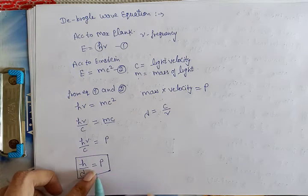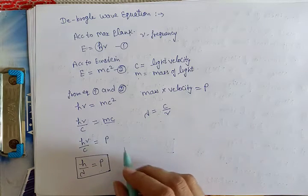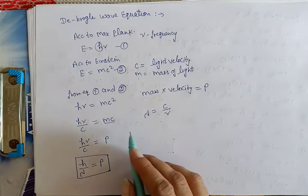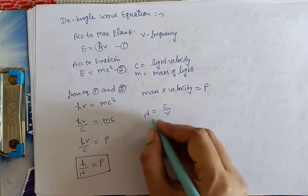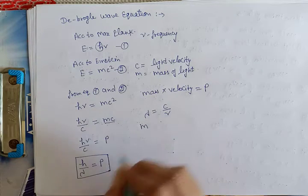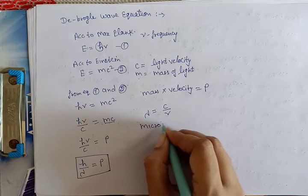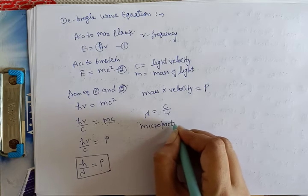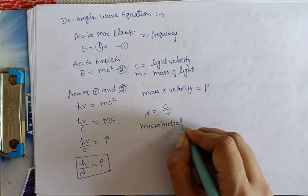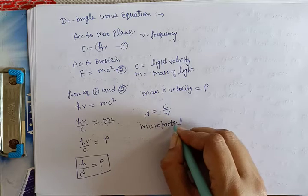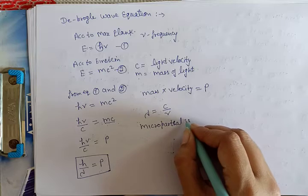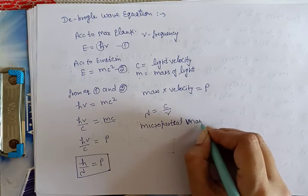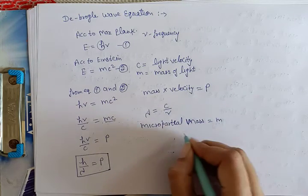اسی value کا use کیا کس نے De-Broglie نے۔ De-Broglie نے یہی equation کس کے لیے use کی particles کے لیے۔ انہوں نے یہ کہا کہ کوئی micro particle ہے جس کا mass m ہے کوئی micro particle v velocity سے move کر رہا ہے تو particle کا mass m ہے velocity v ہے